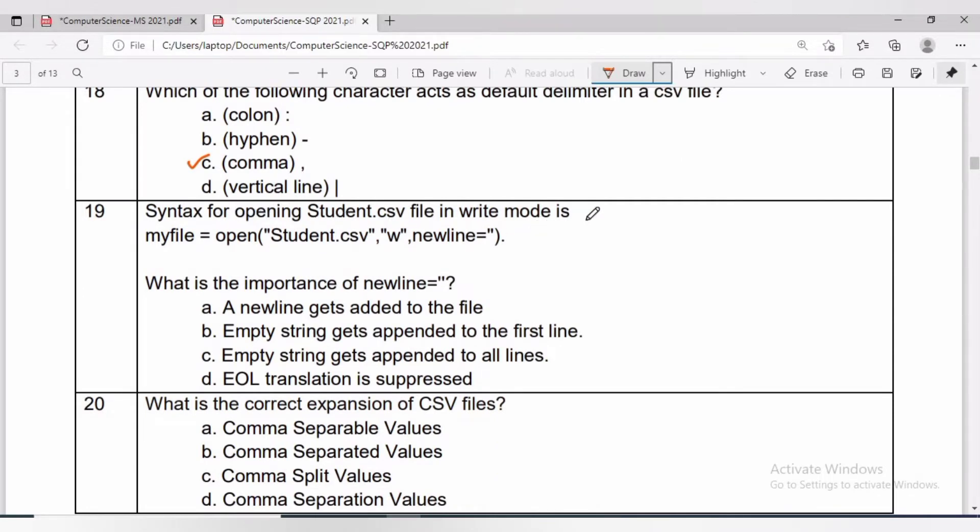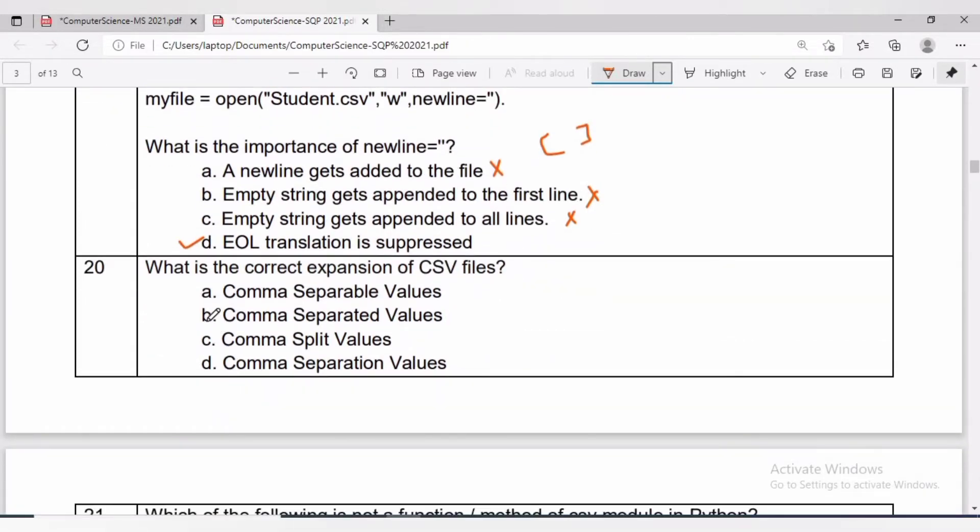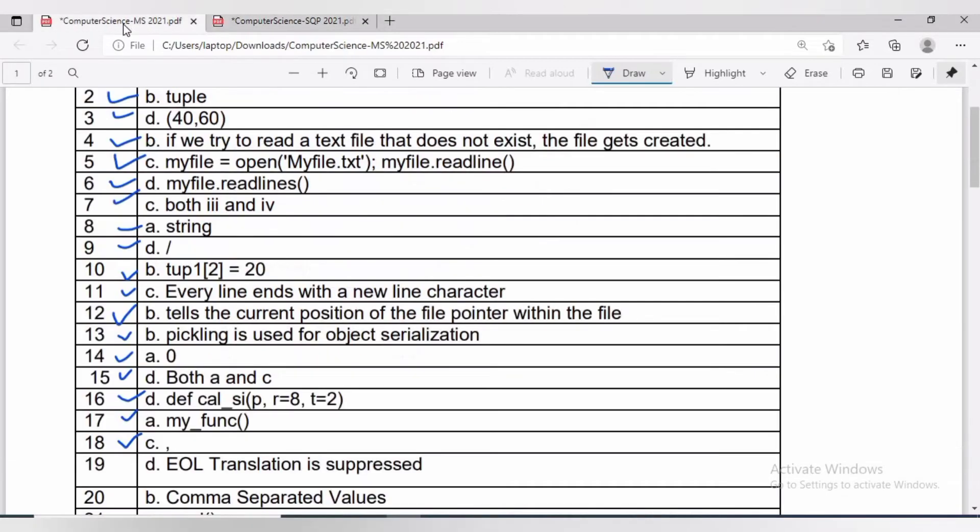What is the importance of newline? Answer will be option D: EOL translation is suppressed. The role of the newline argument is to specify how Python handles newline characters while working with CSV files. We will get empty rows after each row if we do not assign the newline character.